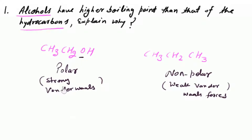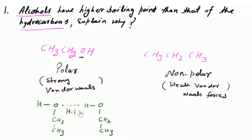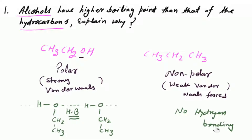दूसरा factor — क्या hydrogen bonding हो रही है? Hydrogen bonding के लिए oxygen, nitrogen और fluorine का होना ज़रूरी है, साथ में hydrogen का। तो alcohol molecules intermolecular hydrogen bonding show करते हैं — ethanol (CH3CH2OH) के molecules आपस में hydrogen bonding बनाते हैं, जिससे boiling point ज़्यादा हो जाता है। जबकि hydrocarbons में hydrogen bonding नहीं होती क्योंकि उनमें oxygen, nitrogen और fluorine नहीं होता। इसलिए comparable molecular masses के case में alcohols का boiling point hydrocarbons से ज़्यादा होता है।